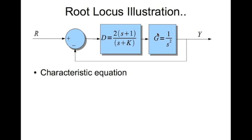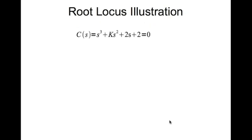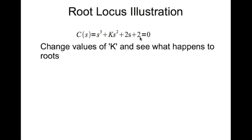The closed-loop poles are also the roots of the characteristic equation, and the characteristic equation is the denominator of the closed-loop transfer function. The first step is to find the characteristic equation: C(s) = 1 + DG. If we substitute D and G and cross-multiply with the common denominator s² times (s+K), we get the characteristic equation.